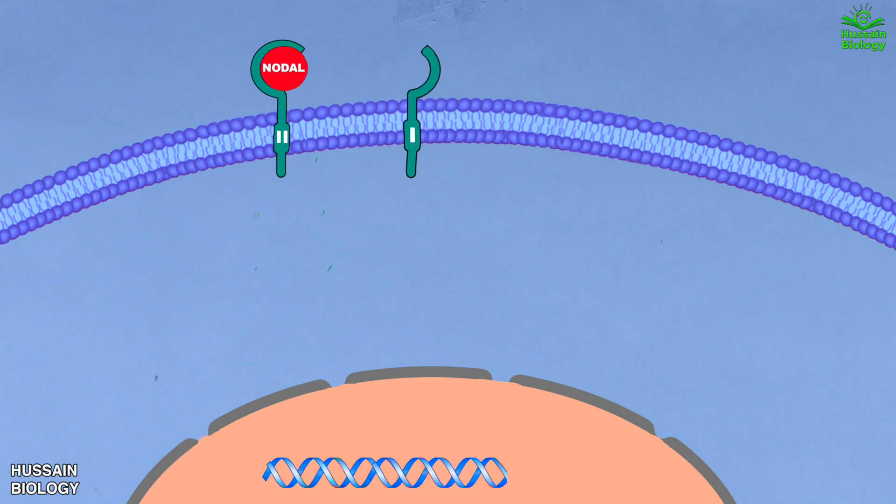binds with the activin receptors as shown in the diagram. Upon ligand binding, we get the dimerization of activin monomers—type 1 and type 2 receptors form a stable complex after ligand binding.